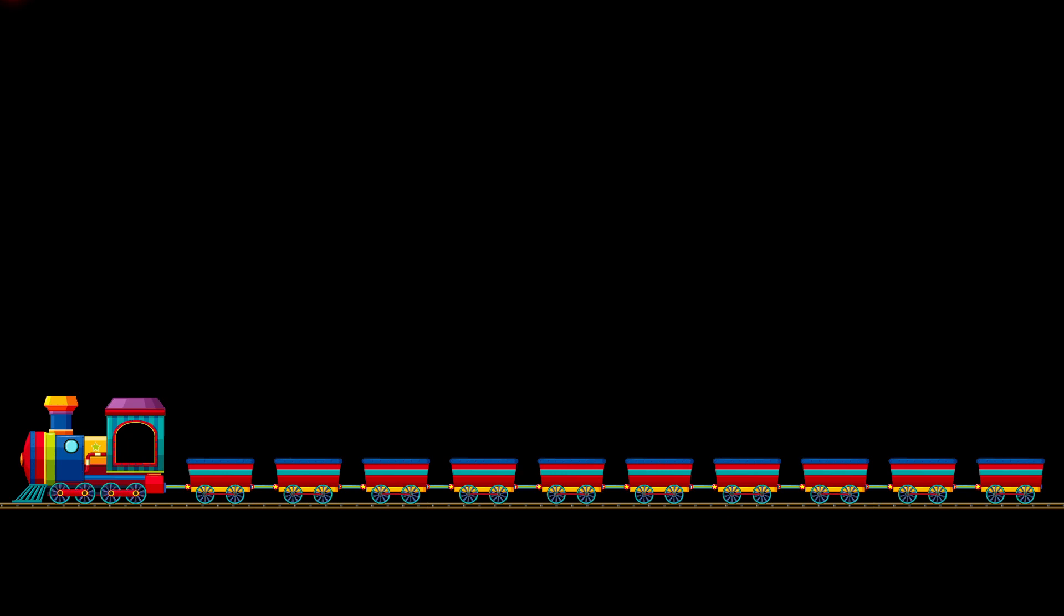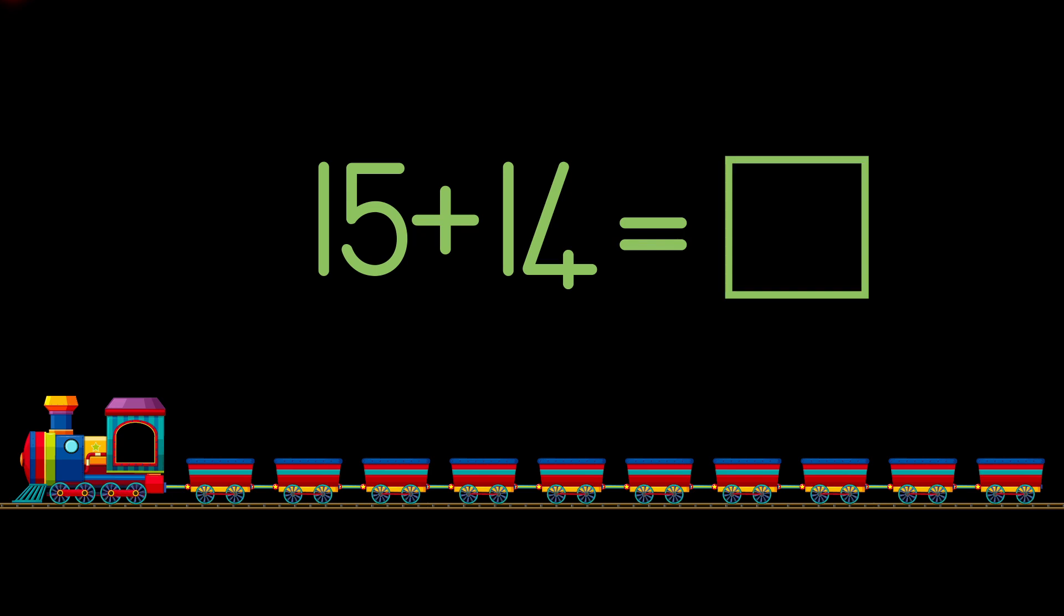Let's say we want to add these two numbers together, 15 and 14. The method we'll use is called train sums. The reason we call them train sums is because we break the sum into different parts and join them up like a train. So let's get started.